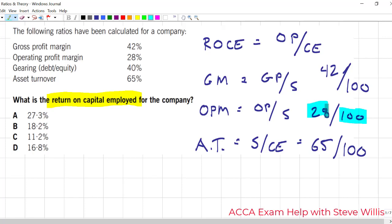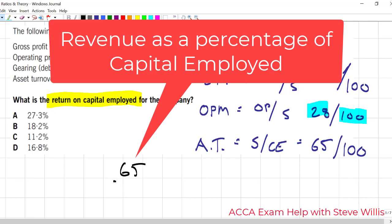We know that the asset turnover is 65. So we can now just use a little bit of math. We can say the asset turnover is going to be 65 over 100.